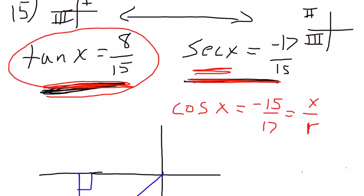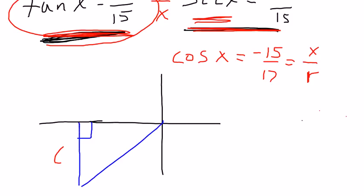Tangent is y over x. So my y value is 8. And my x value is 15. Now, since I'm going in the negative direction for x, I know that's going to be negative. And since I'm going in the negative direction for y, I know that's going to be negative also.